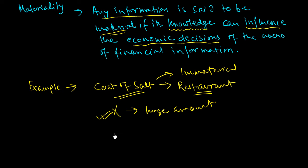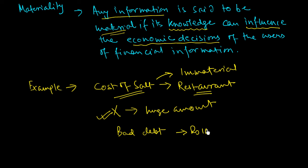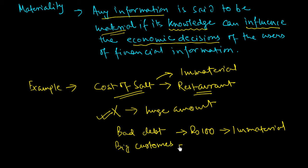Similarly, a bad debt of a very small amount — say rupees 100 — is immaterial and need not be shown separately. But if a big customer goes insolvent, then that matter is material and must be communicated to the users of the financial information through the financial statements.